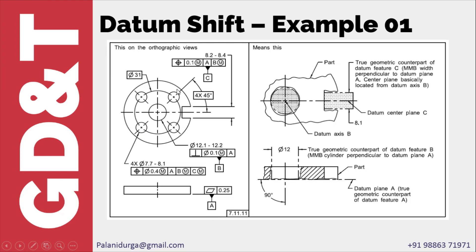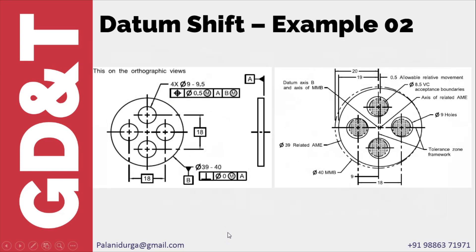We have another example. In this example we will directly discuss maximum material boundary. Here the outside diameter is taken as datum B and maximum material boundary is given for the position of the four holes. So the gauge will have a maximum material boundary. In this case, the maximum material boundary is maximum material condition minus the geometrical tolerance — 40 minus 0 — so the gauge diameter will be 40.